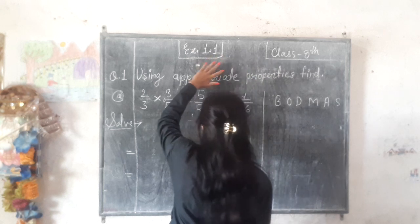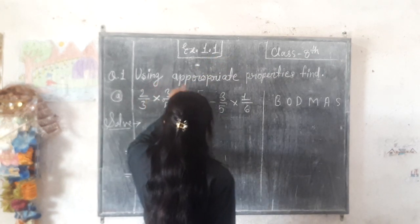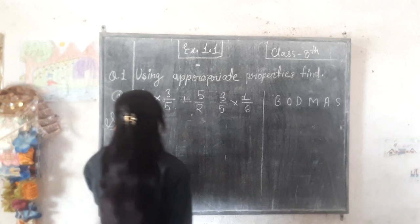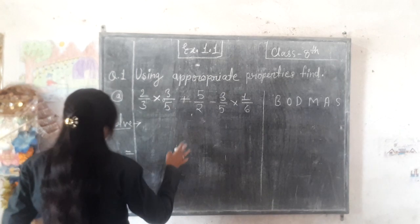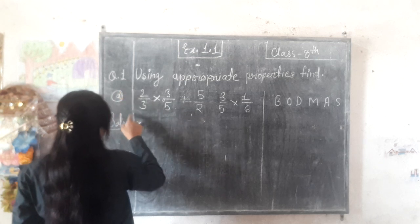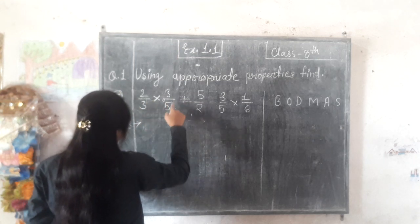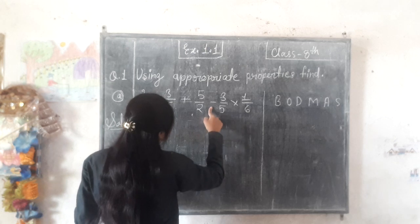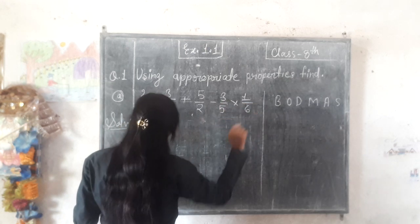Class 8, exercise 1.1, using applicable properties. Property ka use karke humain isko solve karna hai. Joh question diya hai: 2 by 3 into 3 by 5 plus 5 by 2 minus 3 by 5 into 1 by 6.